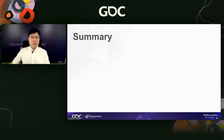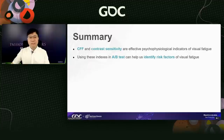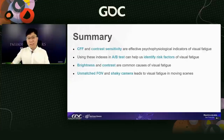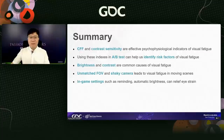Also, we can utilize adaptive brightness features on phones or other devices to adjust screen brightness according to game content and environment lighting, providing a better experience for the eyes. In summary, CFF and contrast sensitivity are effective psychophysiological indicators of visual fatigue — objective, easy to conduct, and comparable. Using these in A-B tests helps identify risk factors. Common causes include brightness, contrast, unmatched FOV, and unsteady camera. In-game settings such as reminders and automatic brightness can relieve eye strain.